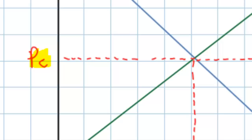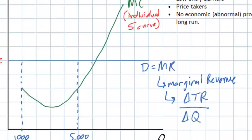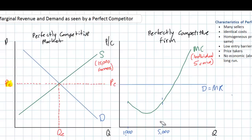The price PE also represents the firm's marginal revenue. Marginal revenue is the change in total revenue attributable to a particular change in quantity. So when the dairy farmer increases his output from 5,000 liters to 5,001 liters, his total revenue changes by the price per liter determined by the market. In other words, his marginal revenue is equal to the price determined by the market. The perfectly competitive firm's demand curve is just a horizontal line equal to the equilibrium price.